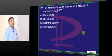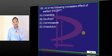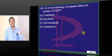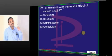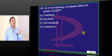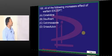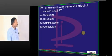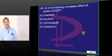Griseofulvin, on the other hand, is the only antifungal drug which is an enzyme inducer. Most antifungal drugs are enzyme inhibitors — griseofulvin is an exception. Because it is an enzyme inducer, griseofulvin will lower the effect of warfarin.